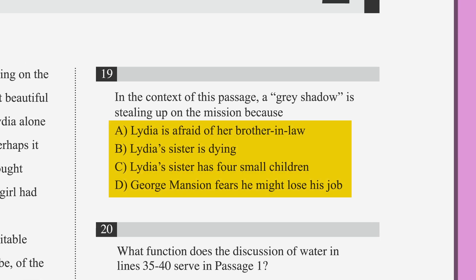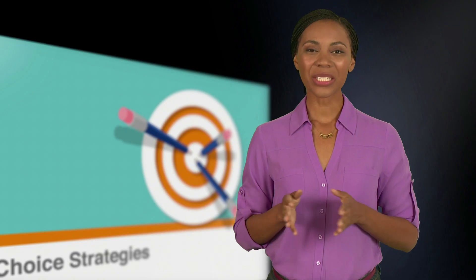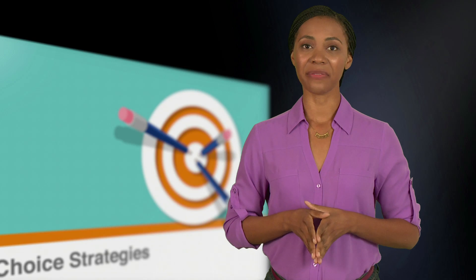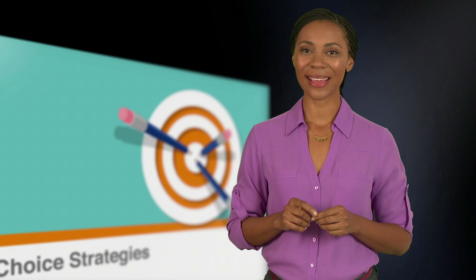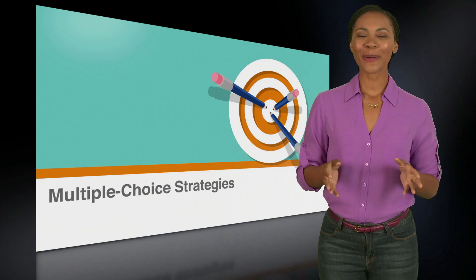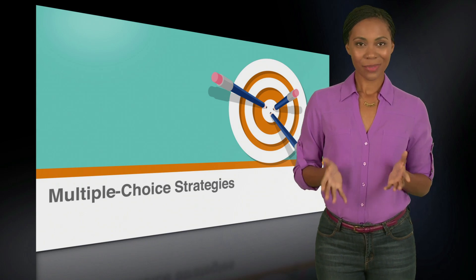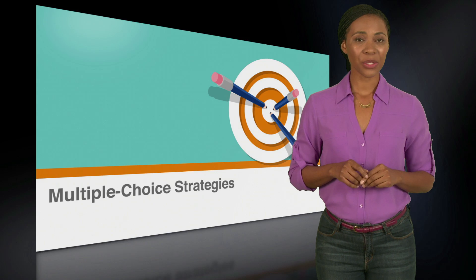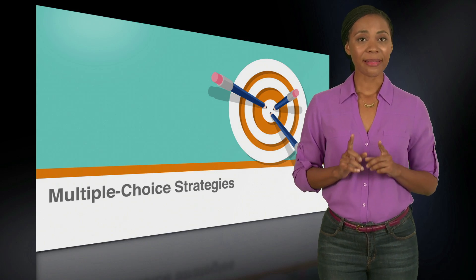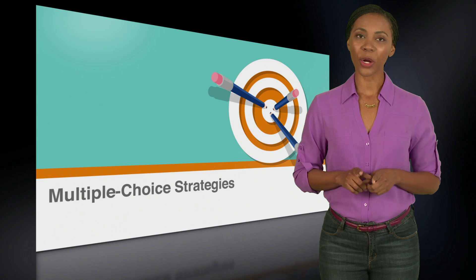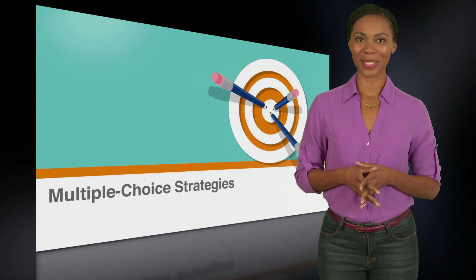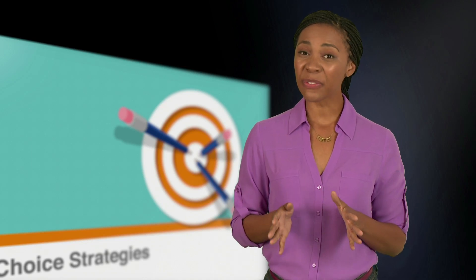Each question will have four answer choices. In this section, the questions are not arranged in order of difficulty, but as you develop your grammar skills and practice these questions, everything should get easier. Grammar and style are both important. Sometimes more than one answer choice will be grammatically correct, but the correct answer has to work within the context and style of the passage. It's important to remember that an answer choice containing a grammatical mistake is wrong, even if you like the style.